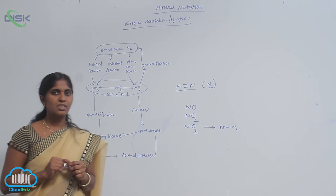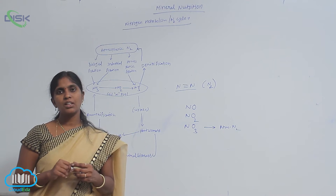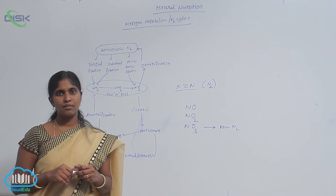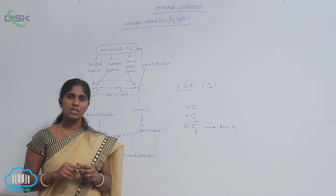And where is it available? In the atmosphere, 78% of nitrogen is available, but when you see in the soil, the availability of nitrogen is very less.